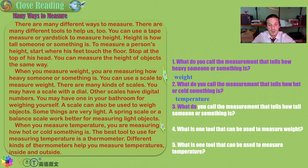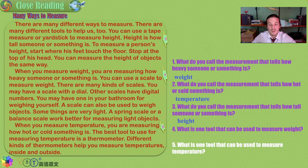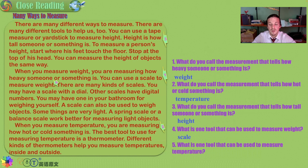What do you call the measurement that tells how heavy someone or something is? Weight. What do you call the measurement that tells how hot or cold something is? Temperature — hot soup, cold ice cream. What do you call the measurement that tells how tall someone or something is? Height. What is one tool used to measure weight? A scale — there are many types. And what is one tool used to measure temperature? A thermometer.